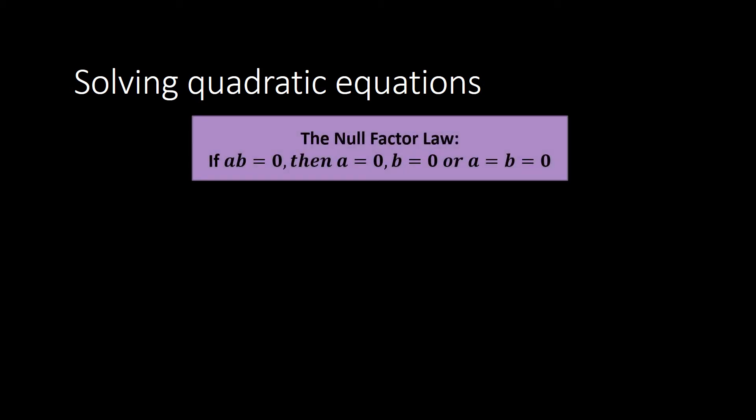Now let's talk about solving quadratic equations. We have a law called the null factor law that we're going to be using, and you'll use it all the way through years 10, 11, and 12. It's actually really simple. If we've got two numbers a and b, and we know that a times b equals 0, then we know that one of them has to be 0 — either a is 0, b is 0, or potentially both are 0. That's all the null factor law tells us.